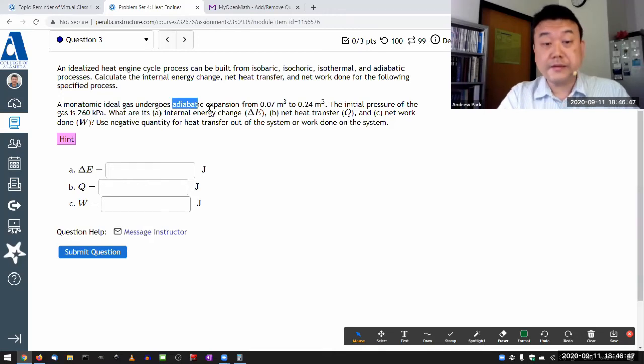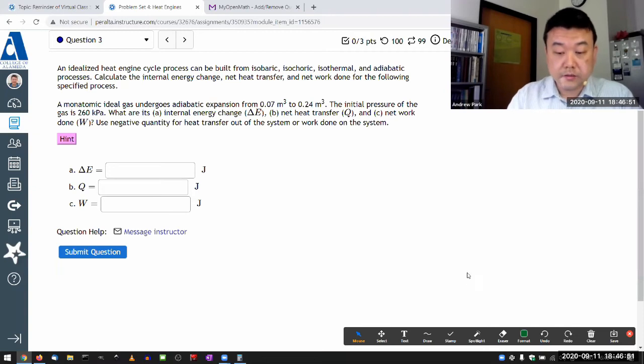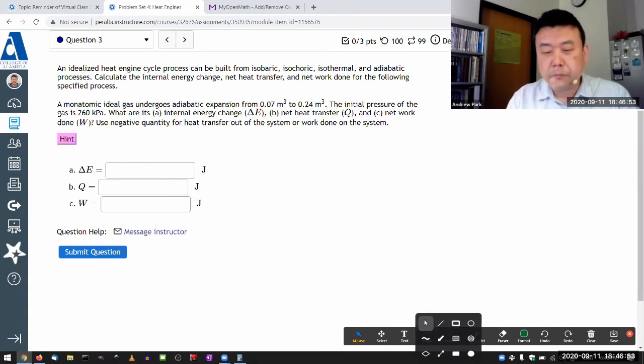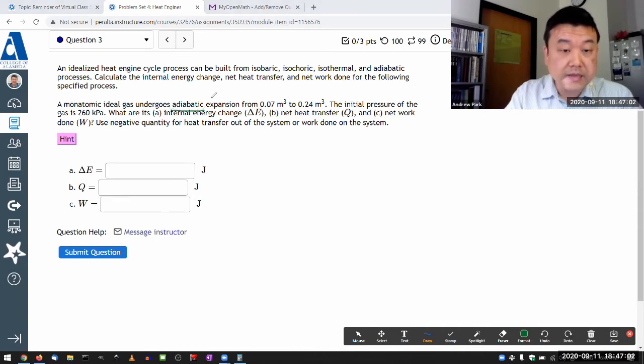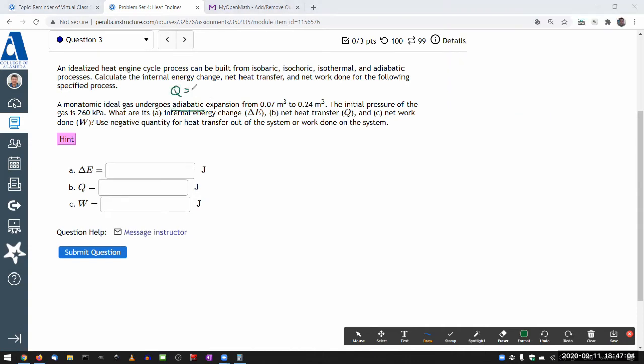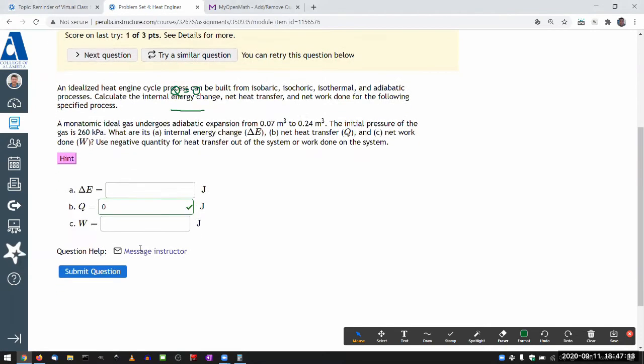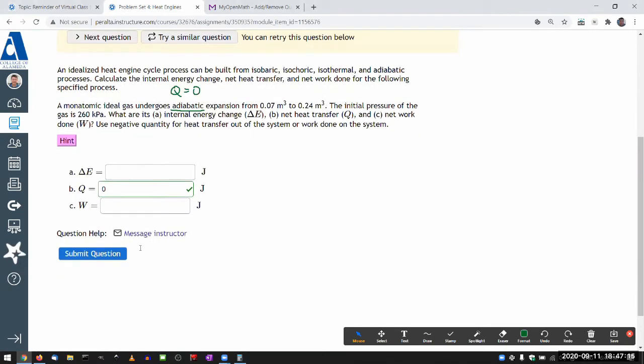With adiabatic processes, the point of these named processes is they always give one piece of information immediately. By definition, adiabatic necessarily means heat transfer is zero. So you just go straight to that, put in zero for heat transfer because that's what adiabatic means. And then for the remaining two quantities, you have to do a little more work.